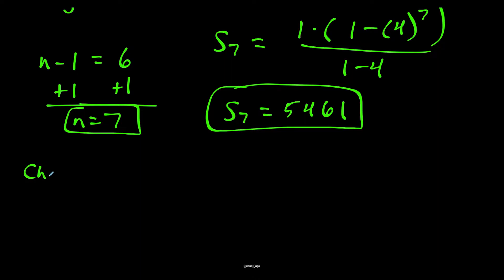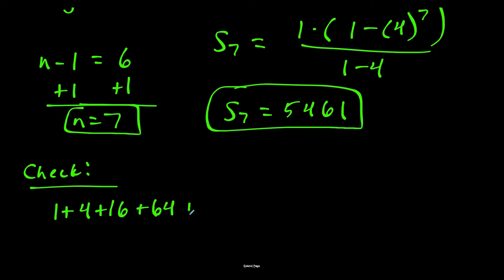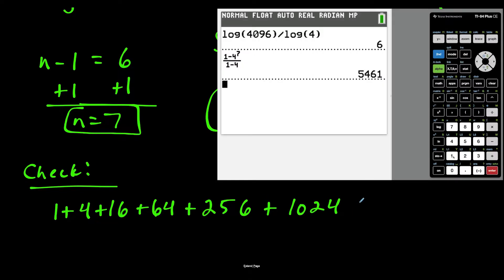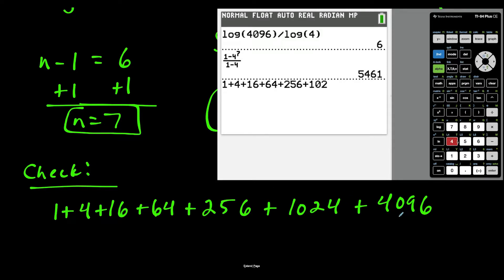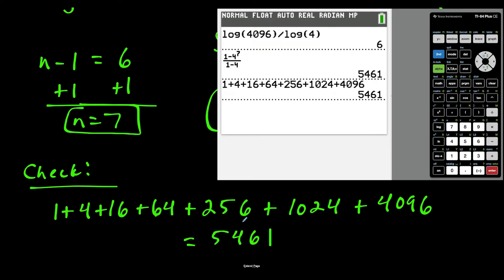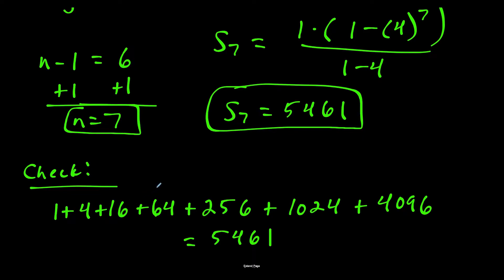We can check our answer by listing the terms: starting at 1, then 4, 16, 64, 256, 1024, and 4096 — that's 7 terms total. Adding all of these together gives 5,461, which confirms our answer. This manual approach is obviously much easier for small n, but if n were 700, you wouldn't list all 700 terms — the formula is essential.